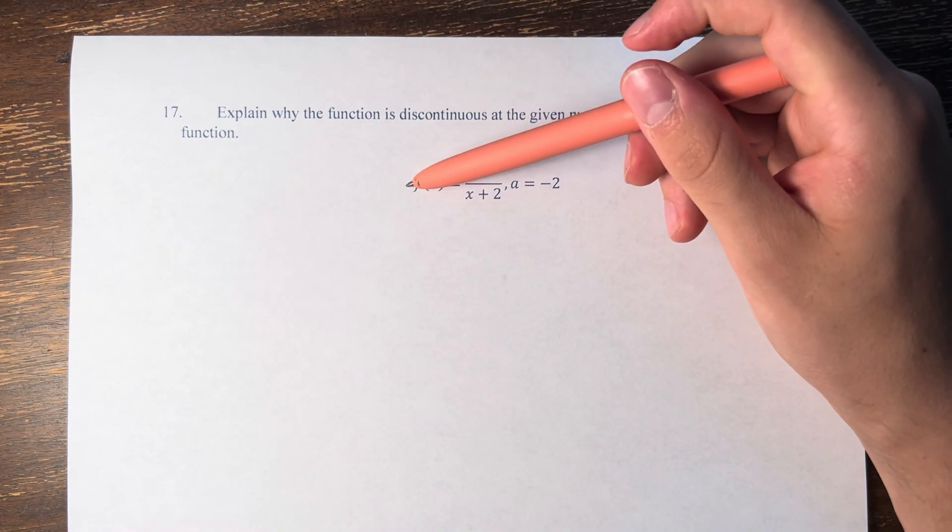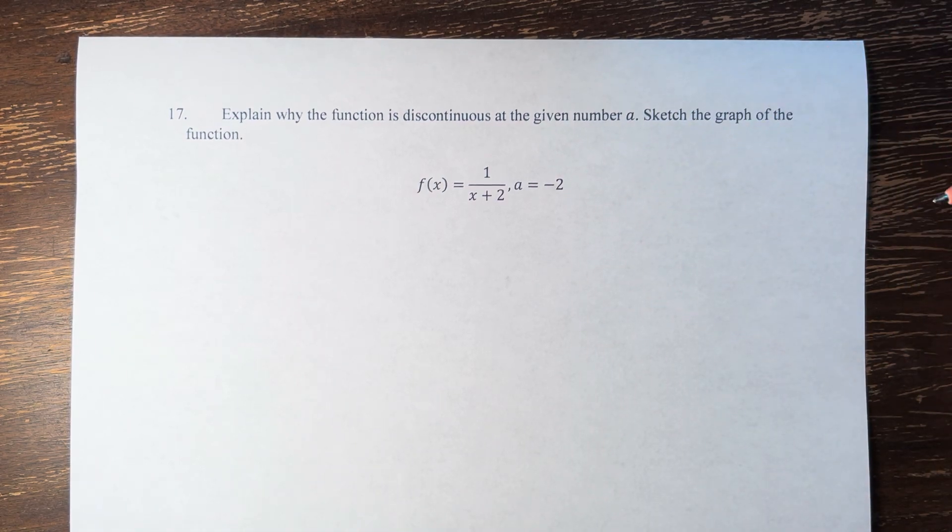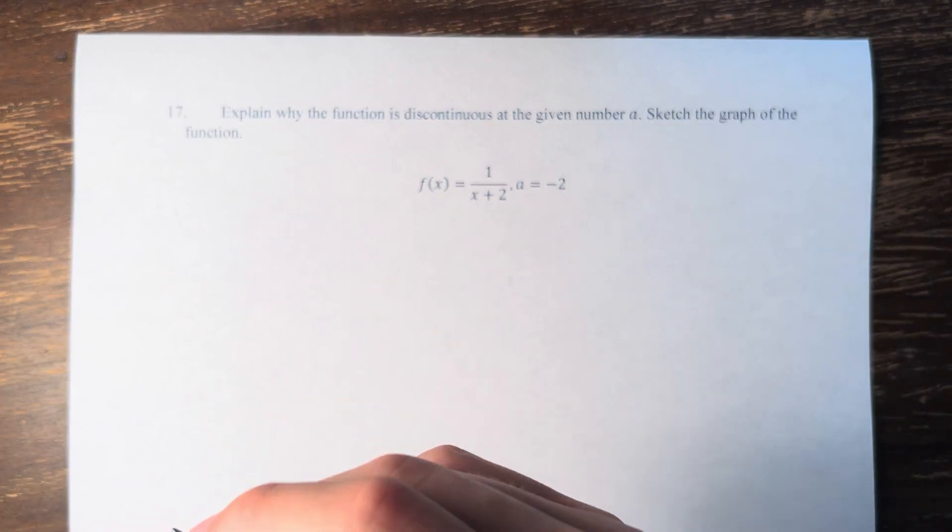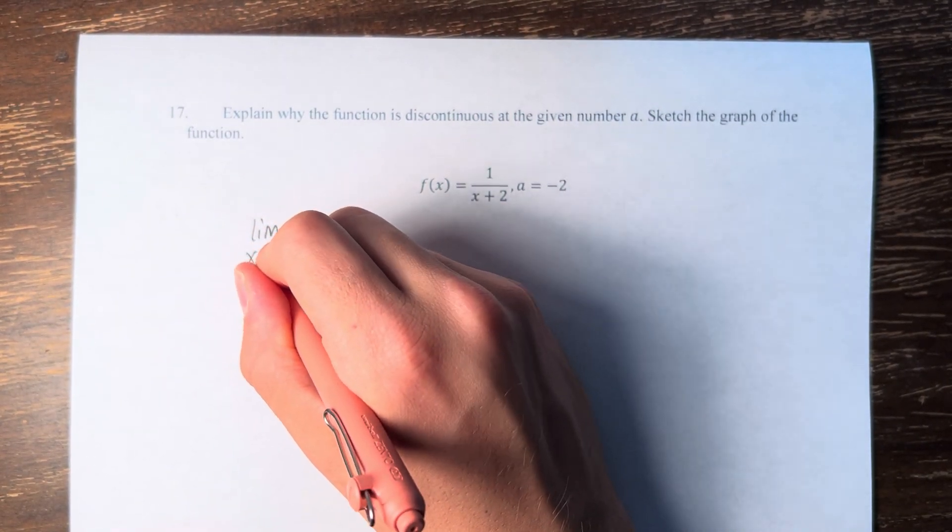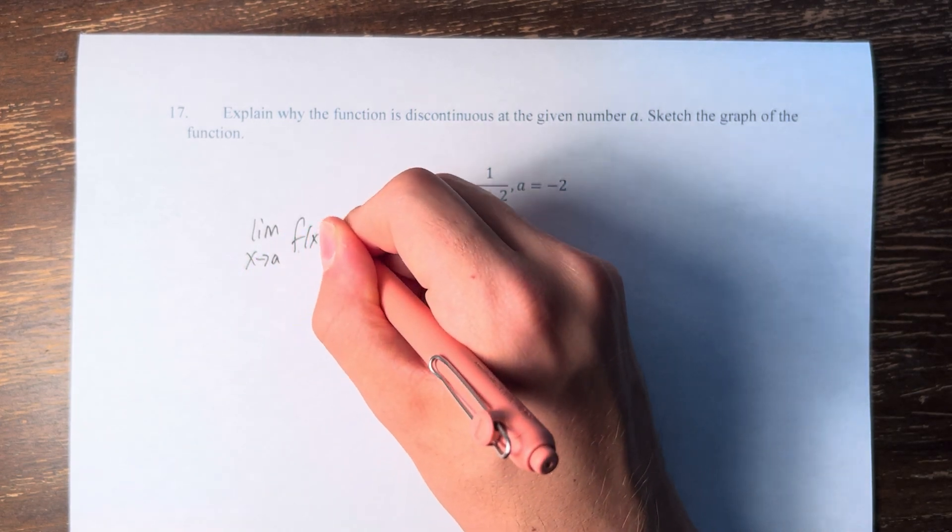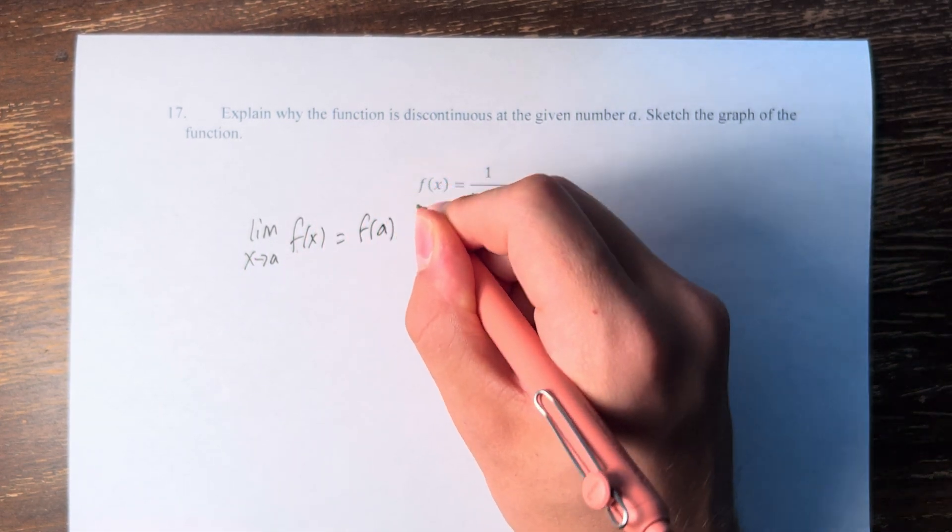So, if we have f(x) is equal to 1 over x plus 2, and a equals negative 2, we can say that the function is discontinuous because for a function to be continuous, the limit as x approaches a of the function must equal the value of the function at that point.